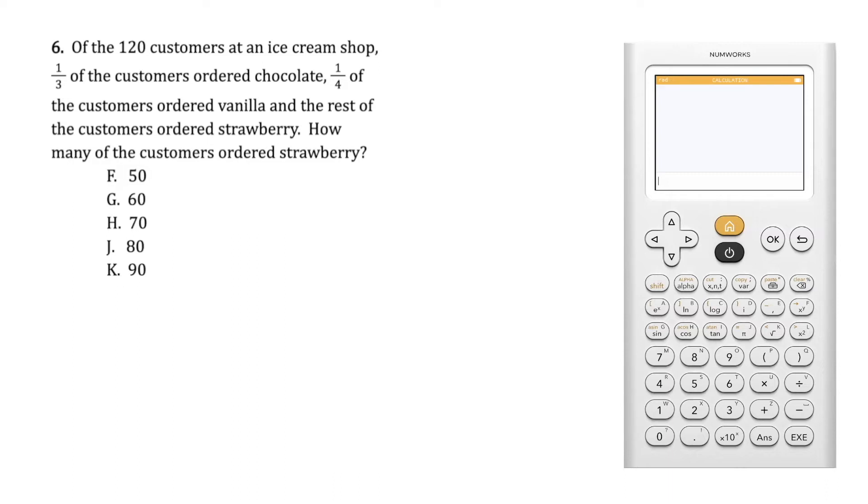How many of the customers ordered strawberry? To answer this question, let us first determine the fraction that ordered strawberry and then the number of customers that is equivalent to that fraction. Since we know one-third of the customers ordered chocolate and one-fourth ordered vanilla, we can find the fraction of customers who ordered strawberry by subtracting from the whole one-third and one-fourth.